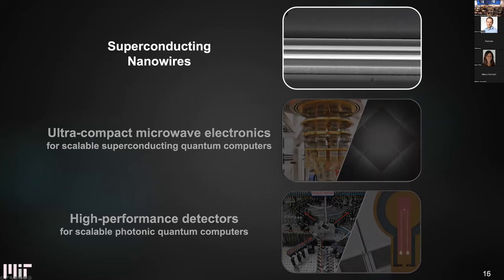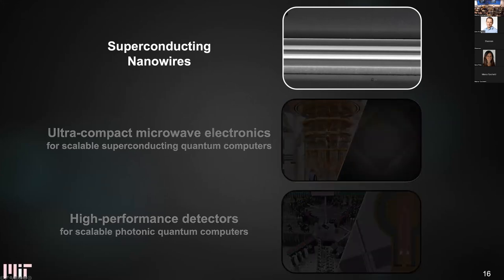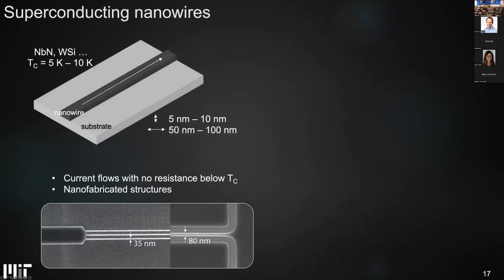Nanowires are a fantastic technology. A single nanowire is a quasi-one-dimensional structure fabricated on a substrate, generally 5 to 10 nanometers thick and 50 to 100 nanometers wide, made with superconducting materials such as niobium nitride, tungsten silicide, or niobium titanium nitride. The critical temperature is about 5 to 10 Kelvin, so you need a fridge to run a circuit made with nanowires. The main property is that current flows with no resistance below the critical temperature. I fabricated examples during my PhD—35 nm and 80 nm samples—in the MIT cleanroom.